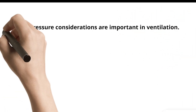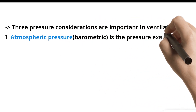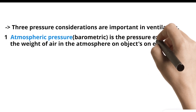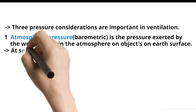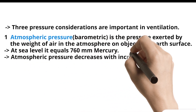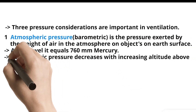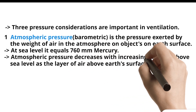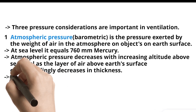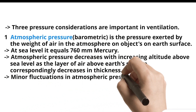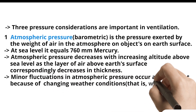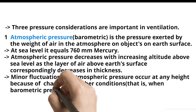1. Atmospheric pressure (barometric) is the pressure exerted by the weight of air in the atmosphere on objects on Earth's surface. At sea level, it equals 760 mmHg. Atmospheric pressure decreases with increasing altitude above sea level as the layer of air above Earth's surface correspondingly decreases in thickness. Minor fluctuations in atmospheric pressure occur at any height because of changing weather conditions, that is, when barometric pressure is rising or falling.